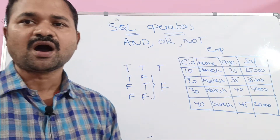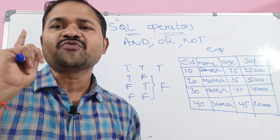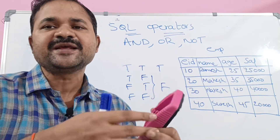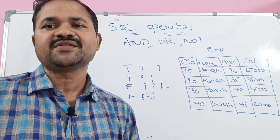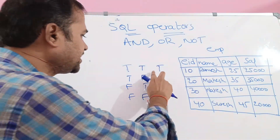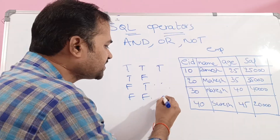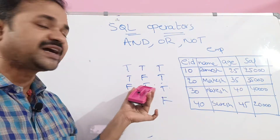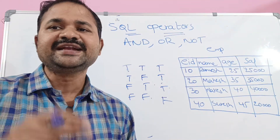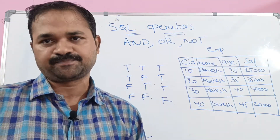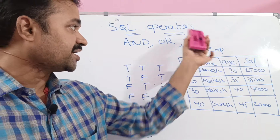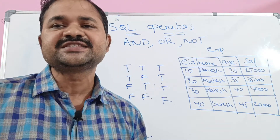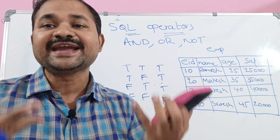Now let's see what OR is. OR means if one of the conditions is true, then it displays the corresponding records; otherwise it won't display. So false OR false means false, but true OR true means true. If one condition is true, the corresponding record is displayed. Next, NOT means negation — it simply inverses or negates the result.